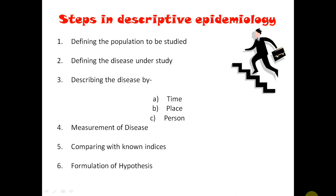So what are the basic steps in descriptive epidemiology? These are the fundamental steps. The first is defining the population. The second one is defining the disease under study. The third one is describing the disease by using time, person, and place. The fourth step is measuring the disease. The fifth step is comparing with non-indices. And finally, the ultimate aim of descriptive study is to formulate a hypothesis.